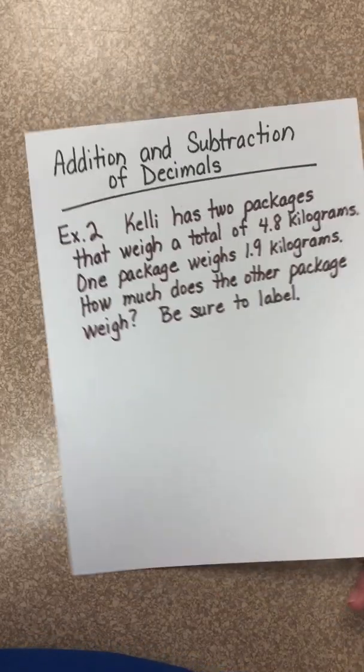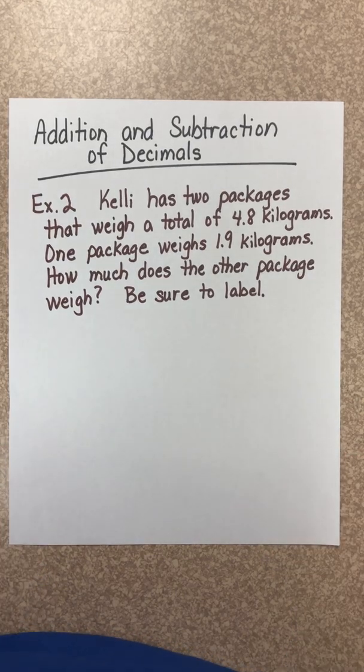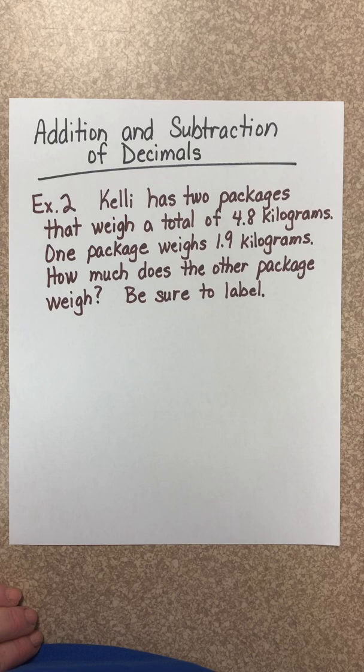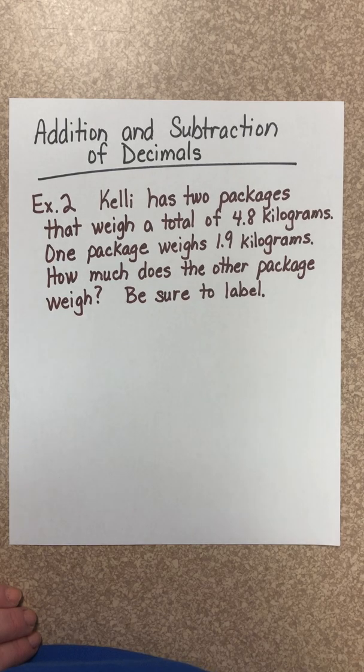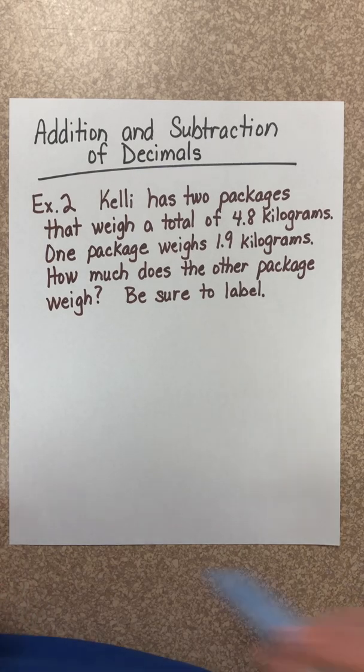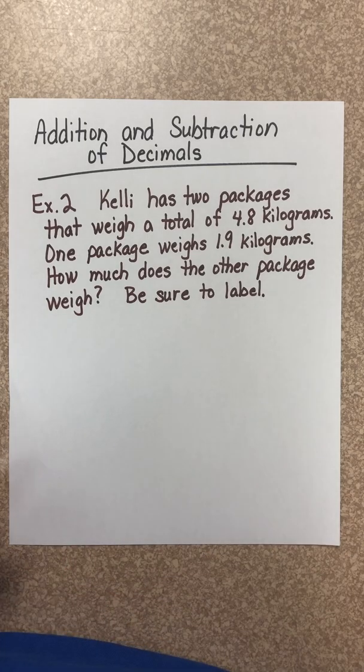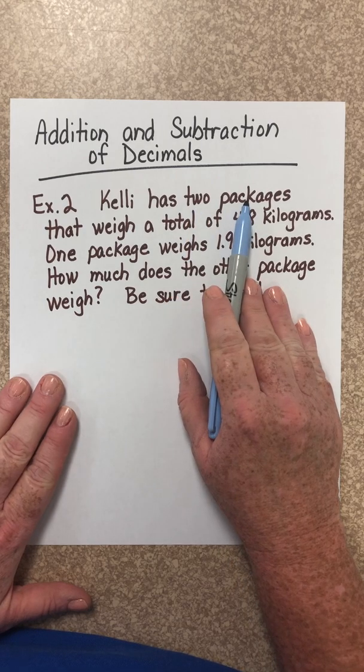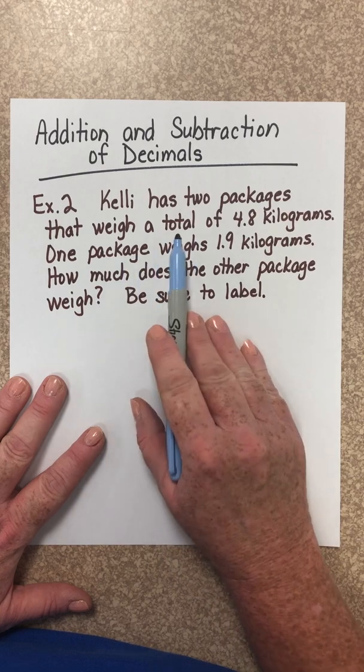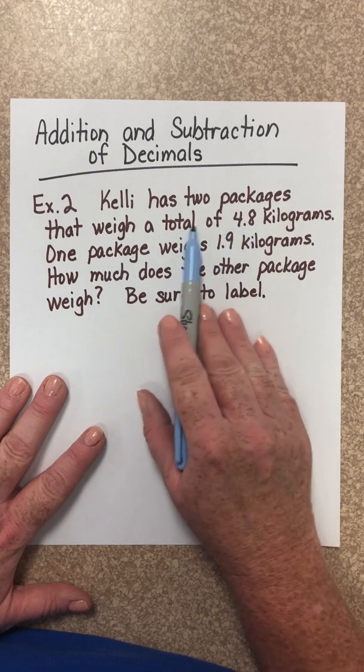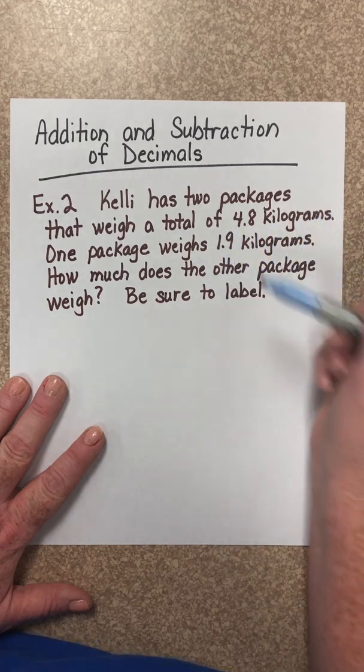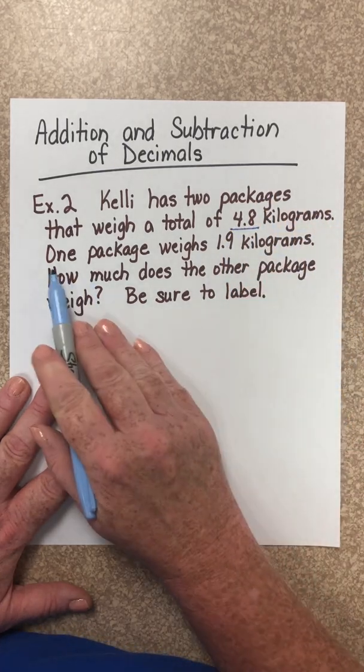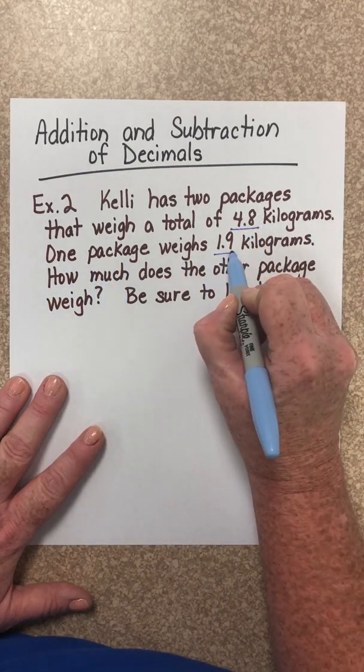Let's look at another example. Kelly has two packages that weigh a total of 4.8 kilograms. One package weighs 1.9 kilograms. How much does the other package weigh? Well, first let's go to the problem and look for the numbers we will be using. We have the number 2 here, but it's referring to the number of packages. We say that the total packages together are 4.8 kilograms, so we're going to need that number. Another package weighs 1.9 kilograms.